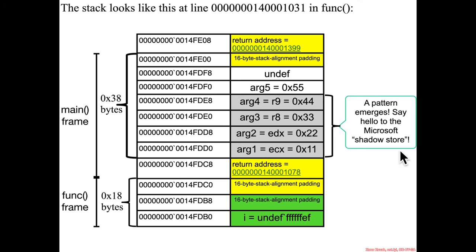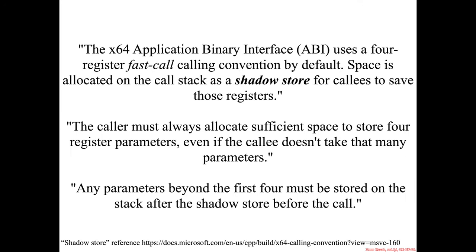So this is what we call the Microsoft Shadow Store. Why do we call it that? Because from the Microsoft documentation, the x64 ABI uses a four register fast call calling convention by default. Space is allocated on the call stack as a shadow store for callees to save those registers.